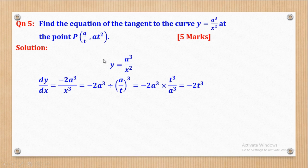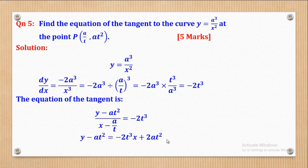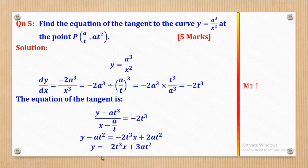So negative 2t³ is now the gradient of the tangent at point p, which is (a/t, at²). Now that I've got the gradient, I can get the equation of the tangent. The equation is given by Δy/Δx equal to the gradient. Considering a variable point (x, y) and the given point, Δy over Δx gives (y − at²) over (x − a/t) equal to negative 2t³. When I cross multiply and collect like terms, I come up with y equal to negative 2t³x plus 3at².